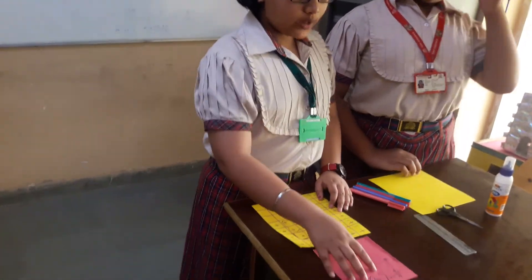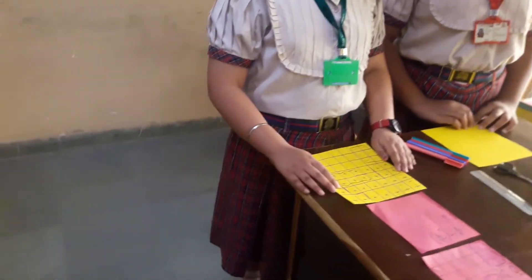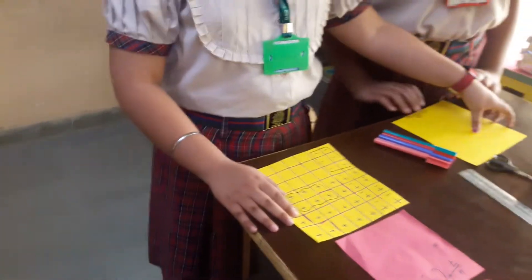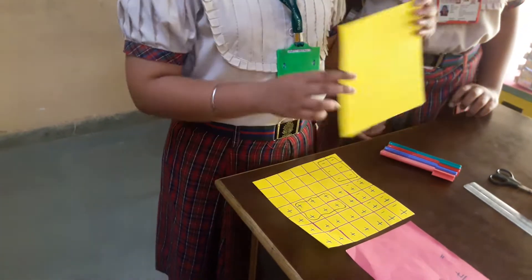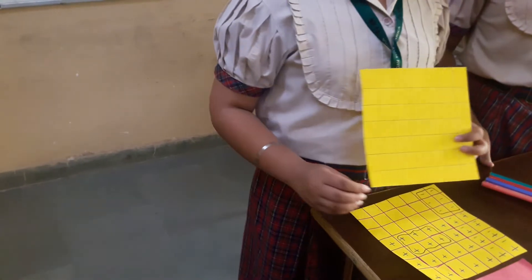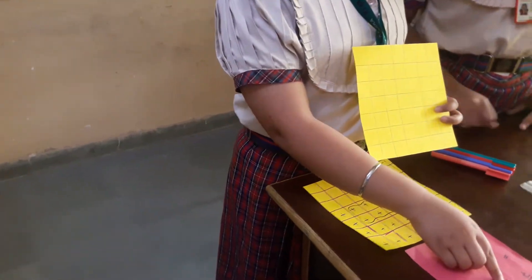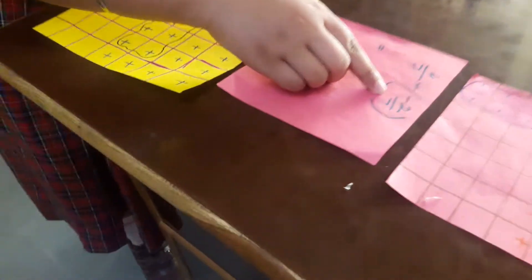Now we are going to divide the square sheet into 7 equal parts by paper folding, because the denominator of both the rational numbers are 7.